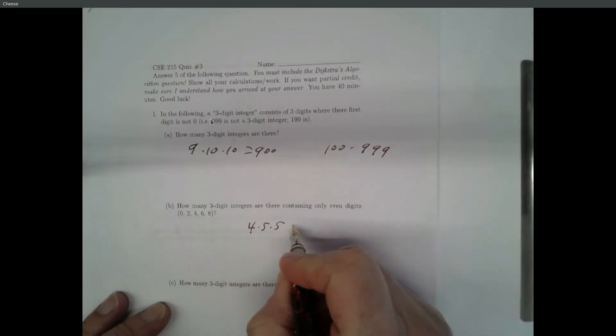How many three-digit integers are there containing only even digits? Same problem, but you're restricted to only these five symbols. If you think of a three-digit integer as still not being allowed to start with a zero, this would be four for your first, five for your second, five for your third — that's 100. Someone asked if a three-digit integer could start with a zero, and I think I said yes, so I gave you wiggle room. If you did five times five times five for 125, you got credit for that also. But technically, as a three-digit integer, it can't start with zero, so you only have four choices for the first digit.